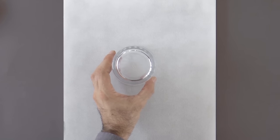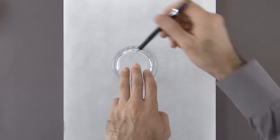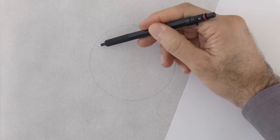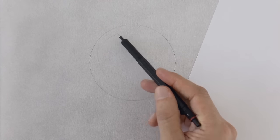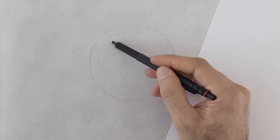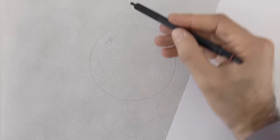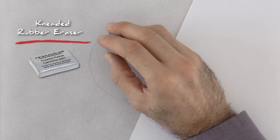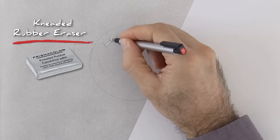And then using a glass of water we draw a circle; you can also do it with a compass. We mark lightly where some of the shadows and lights will go. Here will be the reflection of a window. We can do this with the kneaded eraser or with an eraser with a fine tip.